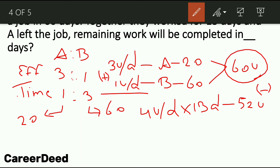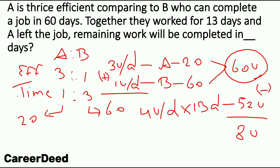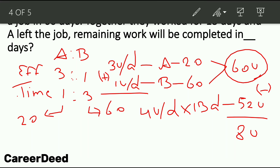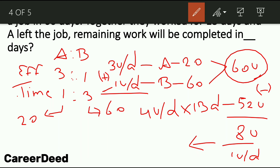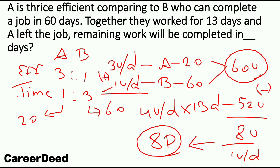So 52 units got completed by A and B in 13 days. Out of 60 units, 52 are done, so the remaining is only 8 units. Now A left the job. B can complete only 1 unit per day. With an efficiency of 1 unit per day, the remaining job will be completed by B in 8 days. So the remaining job here is 8 units, and these will be completed by B in 8 days.